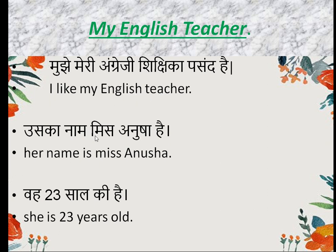Uska naam Miss Anusa hai. For 'uska,' we will use 'her' here because she is a lady. 'Name' means naam, 'is' means hai, Miss Anusa. 'Miss' is used here because she is an unmarried lady. So the complete sentence will be: Her name is Miss Anusa.